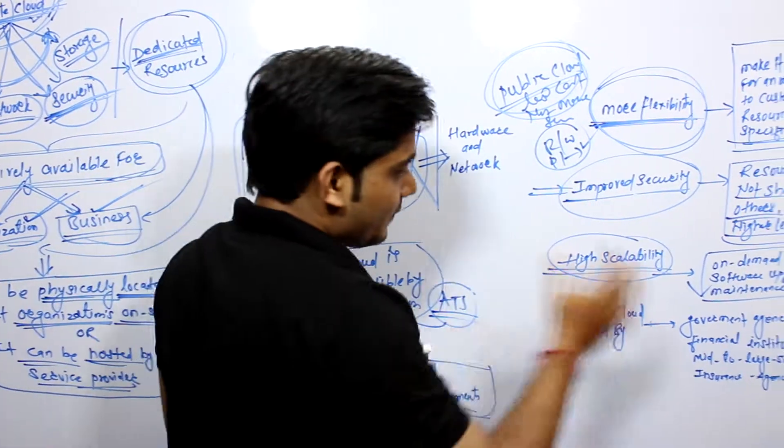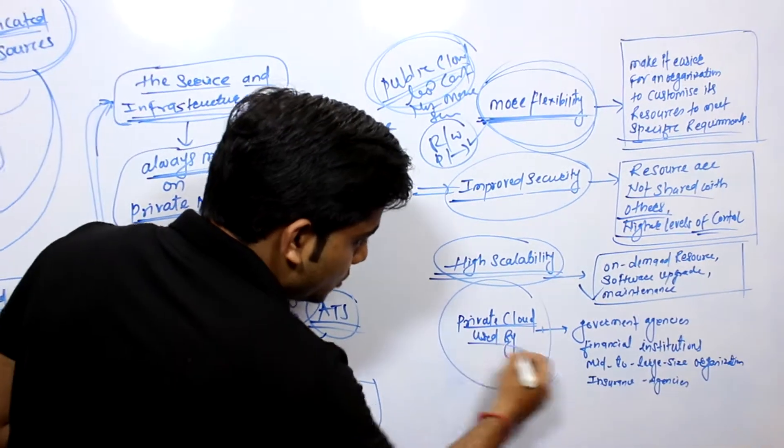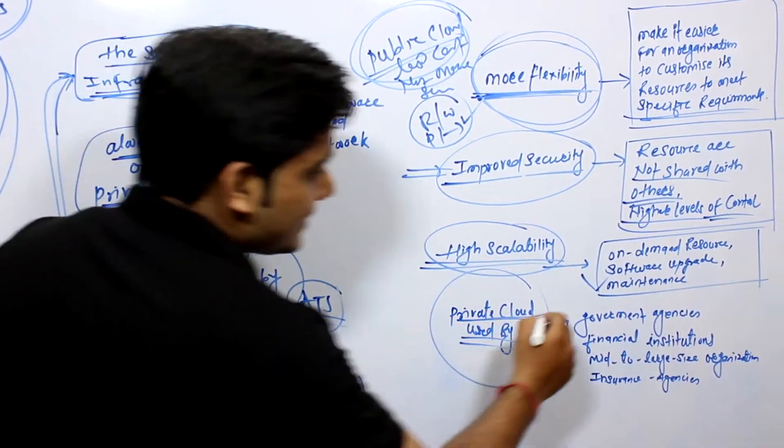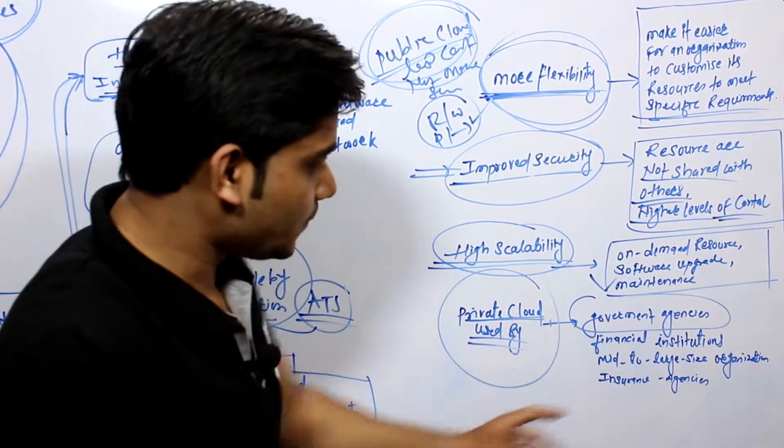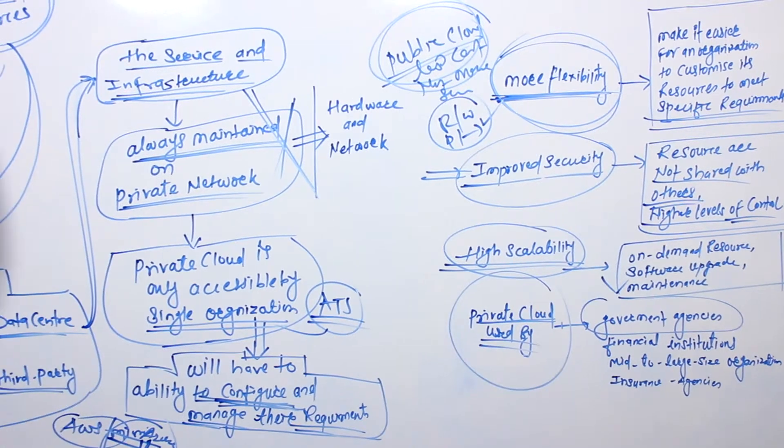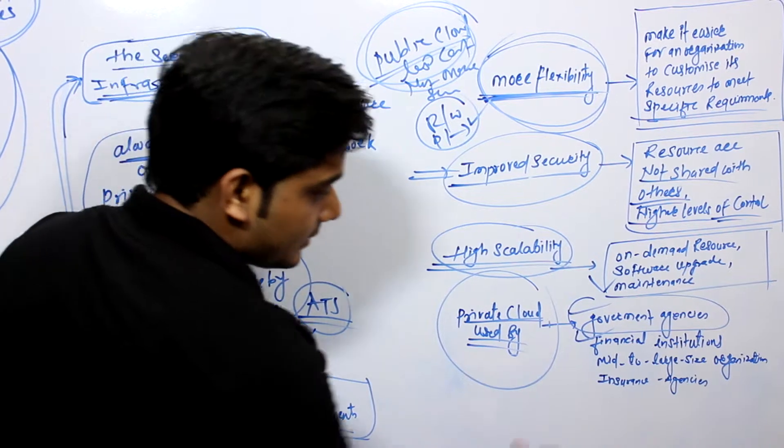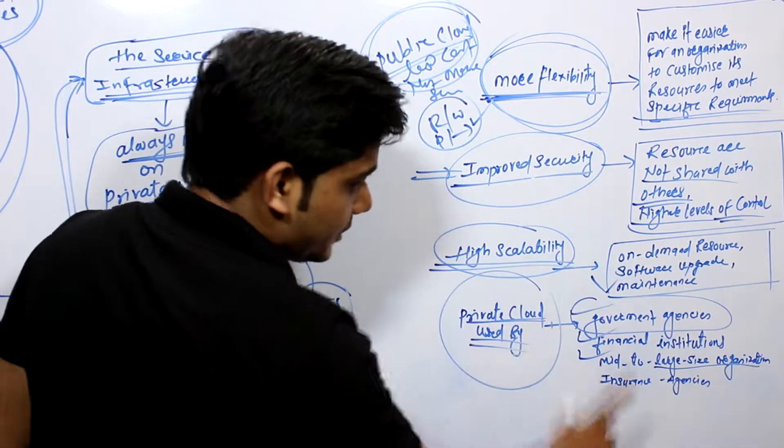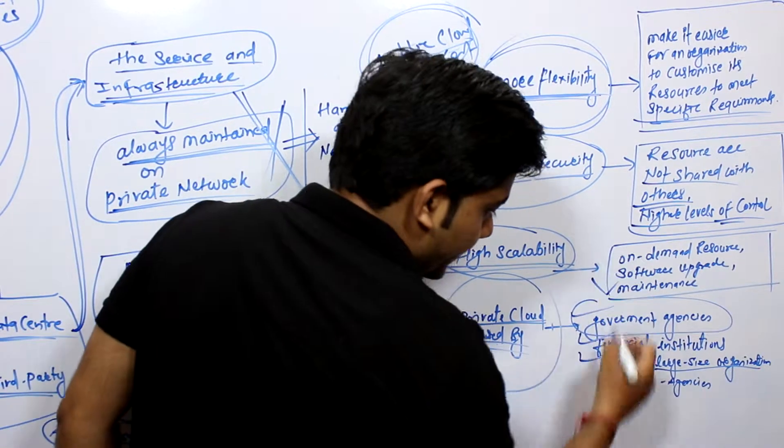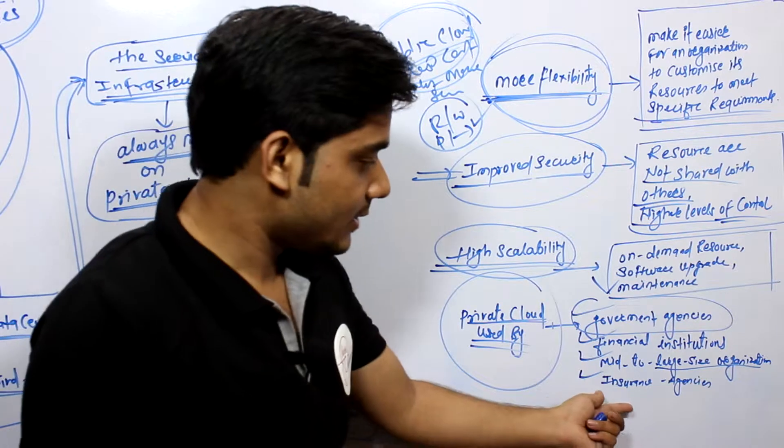So we will see some examples for that. Private cloud used by, first one, that is government agencies. Why the private cloud used by government agencies? Then financial institutions, then mid-to-large organizations with highly secure work, then insurance agencies where many people can access.